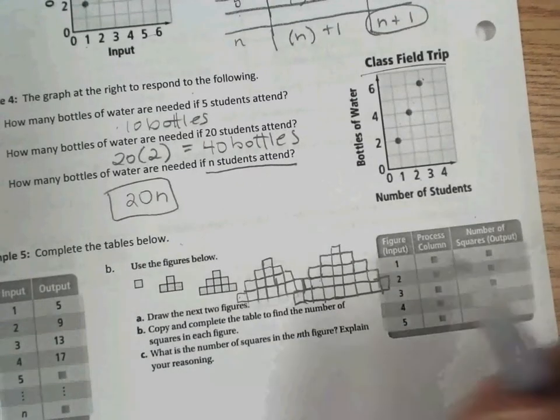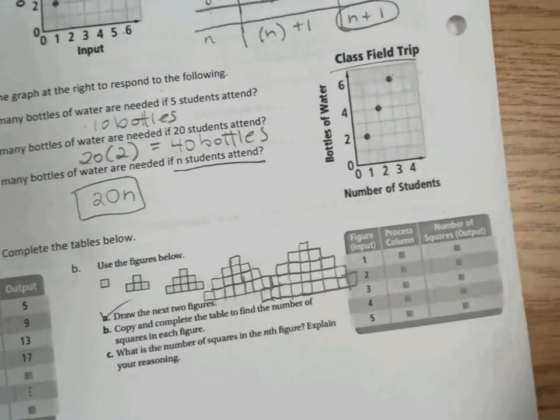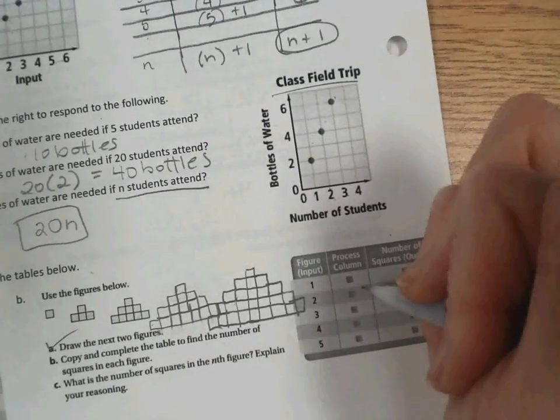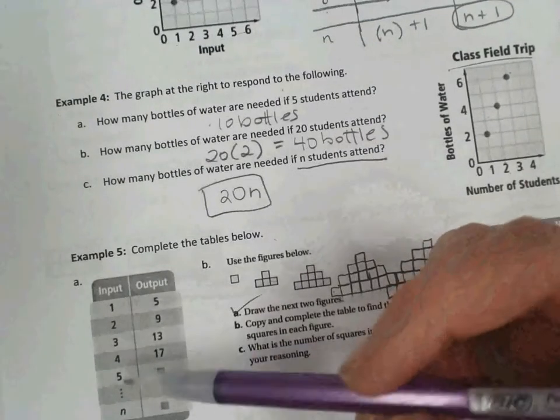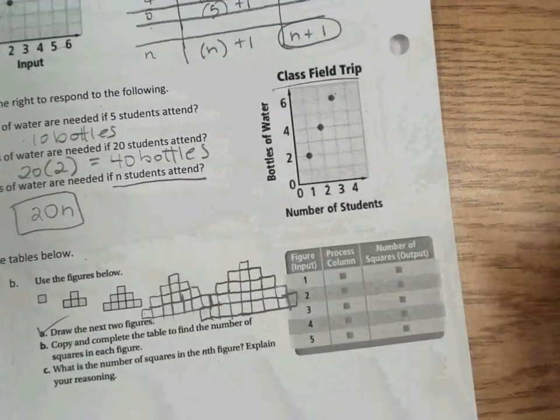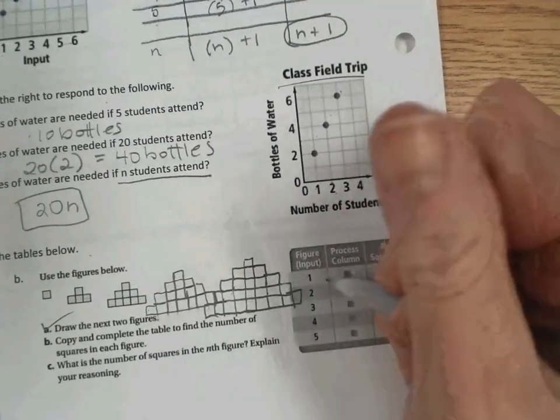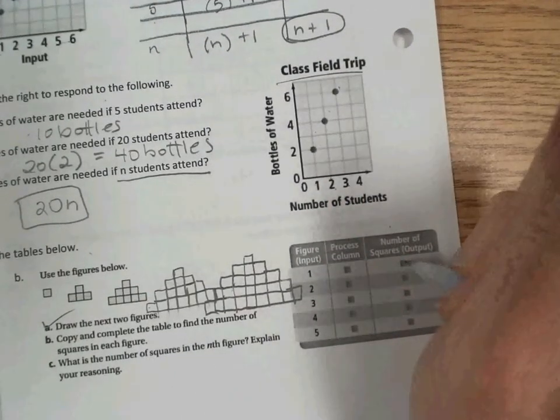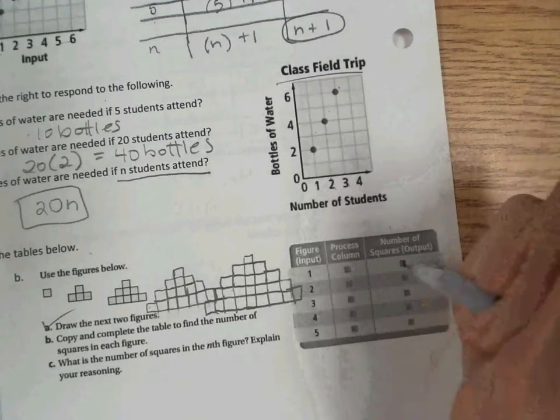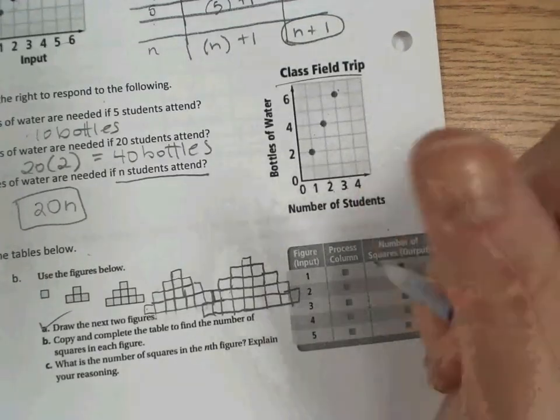And so copy and complete the table. We did that one. To find the number of squares in each figure. So we see here that we have the input in, oh, we skipped A. We'll go back to A. The input for our first figure is 1. And the output then would be 1. There are 3 squares in our second figure.